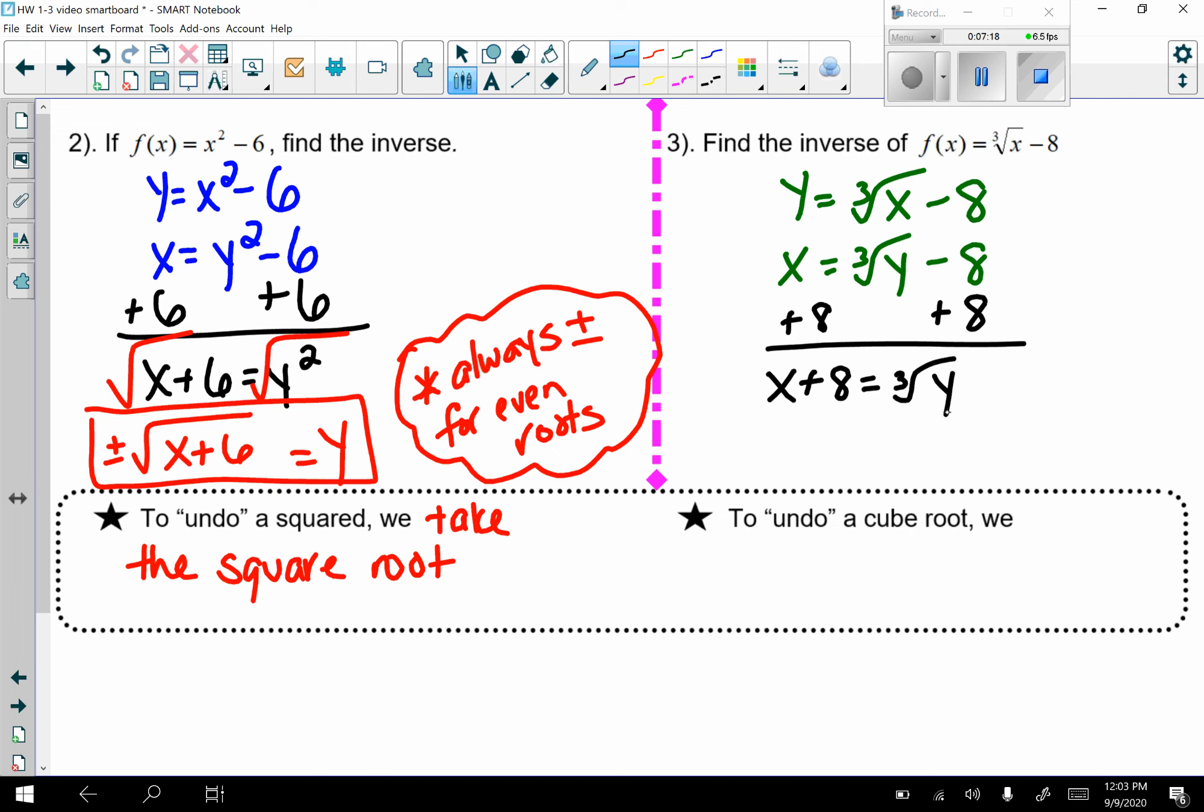To undo a cube root, you are going to raise both sides to the third power. If it was a square root, you would raise both sides to the second power. To undo any root, you're going to raise to that power. Because roots and exponents are opposites of each other, just like addition and subtraction or multiplication and division. So I have y equals x plus 8 cubed, and you can leave it just like that. Do not multiply out x plus 8 times x plus 8 times x plus 8. So we will practice more, but remember the main thing with inverse is switch x and y, solve for y. That's the big takeaway, and we're going to do lots of practice as we continue this topic.